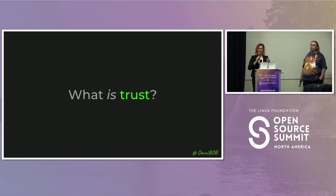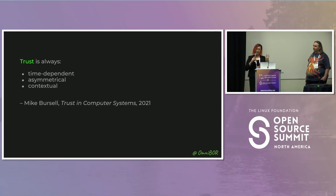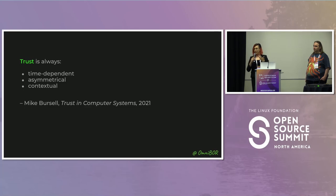Before we go further, let's take a big step back and ask: what is trust? Trust is not a property inherent in any system or piece of software — it is an assessment based on experience. Trust is a declaration made by an observer; nay, an attestation. It is not a property of the thing observed. And trust always has three properties: it is time-dependent — I might trust software today and tomorrow learn about a vulnerability; it is asymmetrical — I might trust you driving a car with me as a passenger without you needing to trust me; and trust is contextual — you probably shouldn't trust me to drive that car after three drinks.